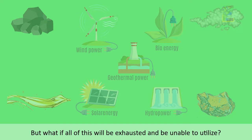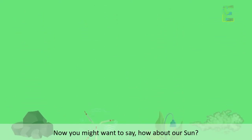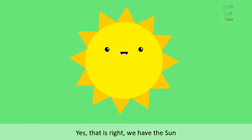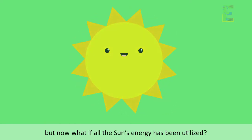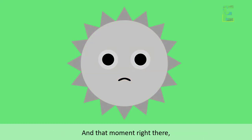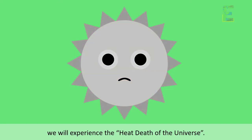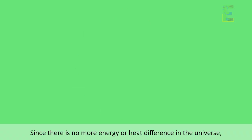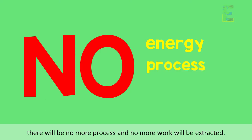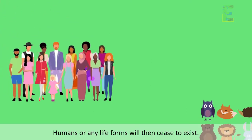Now you might want to say, how about our Sun? Yes, that is right — we have the Sun. But what if all the Sun's energy has been utilized? At that moment, we will experience the heat death of the universe, since there is no more energy or heat difference in the universe. There will be no more process, and no more work will be extracted. Humans or any life forms will then cease to exist.